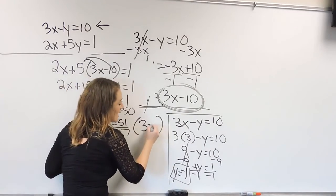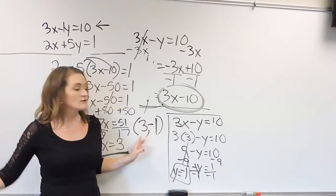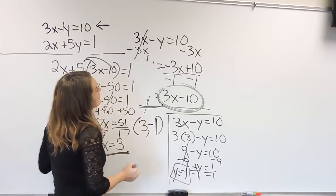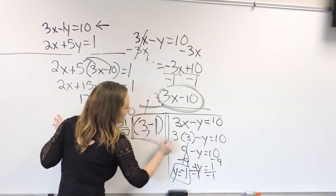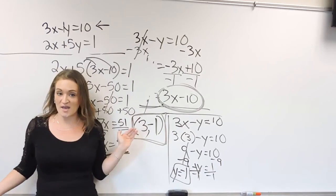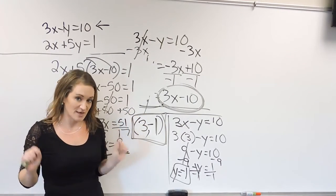So now I can plug that negative 1 back over here to finish out my point. So that means that this system here has a solution of 3 negative 1. That's where those two lines would intersect.